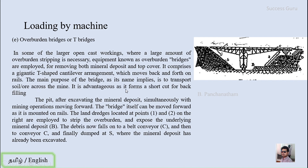The main purpose of the bridge, as its name implies, is to transport soil as well as ore across the mine. It is advantageous as it forms a shortcut for backfilling. When mining starts at one end, as it progresses the overburden is backfilled into the earlier mine depression, so not much space is needed for dumping. The pit, after excavating the mineral deposit simultaneously with the mining operation, moves forward — material is removed, the mineral deposit is transported to the processing unit, and the overburden is dumped as backfill.